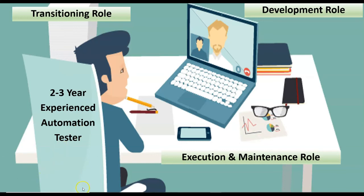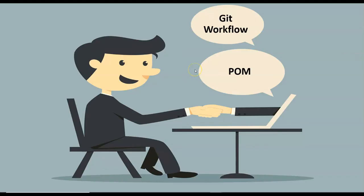Additional responsibilities for a person with 2-3 years of automation experience include working with a shared repository like GitHub. This involves forking or cloning the repository to your local machine, maintaining branching (e.g., separate branches for login, home, etc.), committing code regularly so it is safe even if your system crashes, pushing code to the remote repository, creating pull requests for review, finishing review comments, closing the branch, and handing over the test cases to your manual team members.